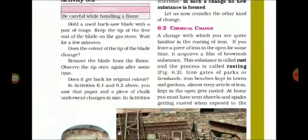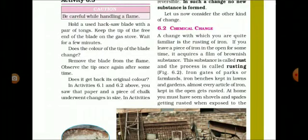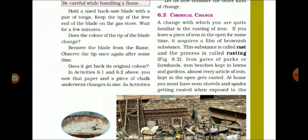A change with which you are quite familiar is the rusting of iron. So many times you have seen there is a rusting of iron, means the iron objects have a layer of brownish, reddish brownish layer that forms on the outer covering of the iron objects, especially in the rainy season. If you leave a piece of iron in the open for some time, it acquires a film of brownish substance. If there are some iron objects in the open space, they acquire a brownish substance or brownish covering over them if the environment is slightly humid.